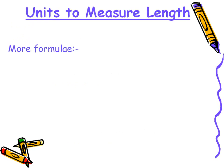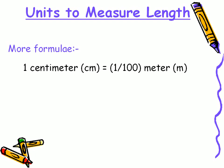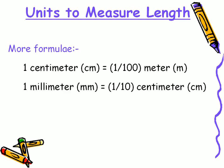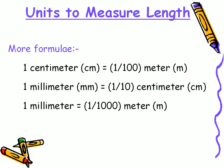After learning the basic formulae, let's focus on some more relations between metric units. One centimeter is equal to one by one hundred meter. One millimeter is equal to one by ten centimeter. And one millimeter is equal to one by one thousand meter.